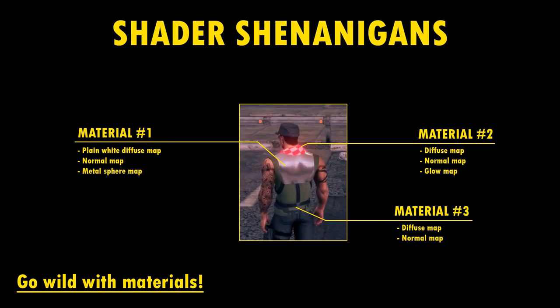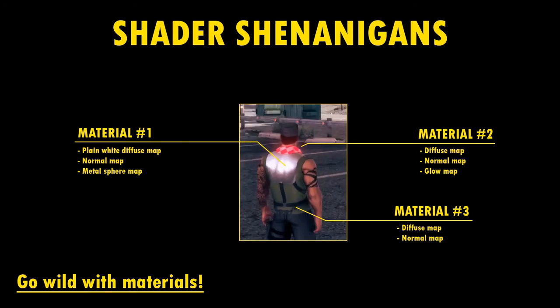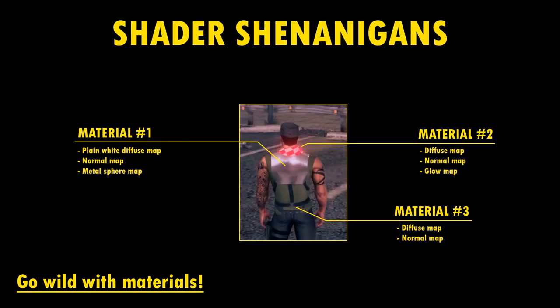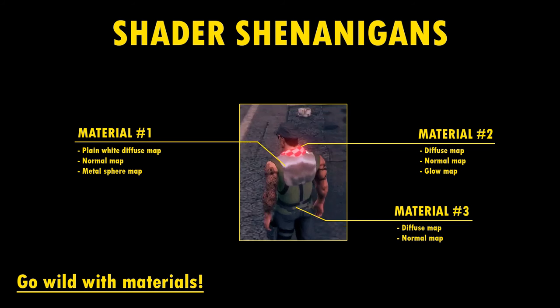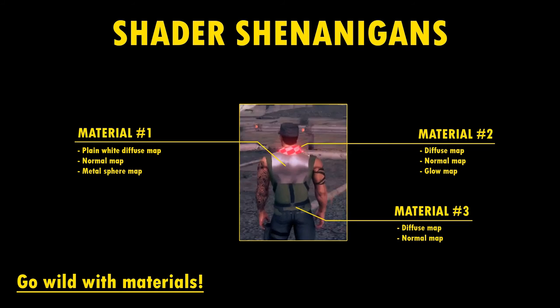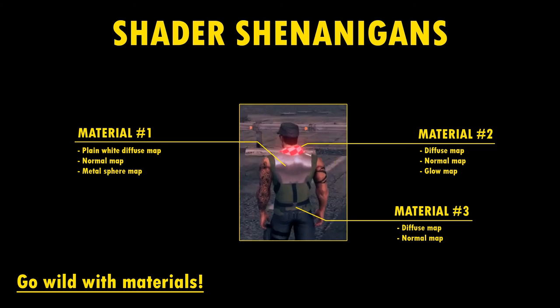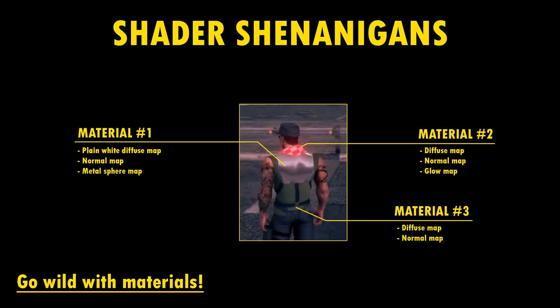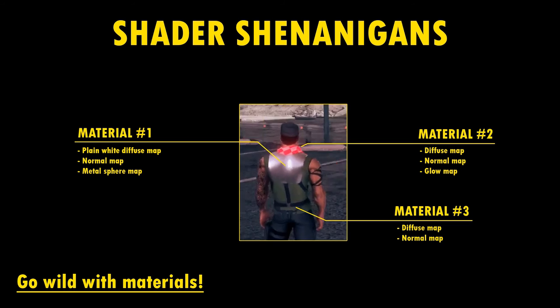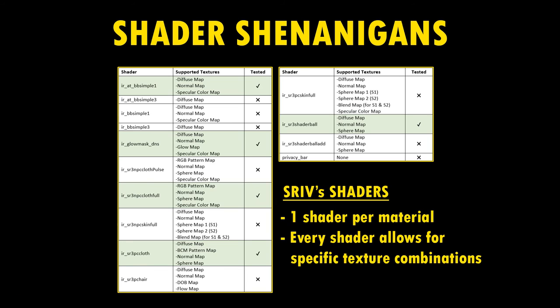Something to notice is that Scenestro 4 has multi-material support, so you can use as many materials as you want on a single 3D model. This allows for great artistic freedom in shader and texture combinations. For example, you could have some parts of your model use only a diffuse map and a normal map, and other parts could be shaded with a sphere map. To every material you add to your model, you have to assign one of Scenestro 4's shaders. Note that every shader allows for different texture combinations, so make sure you don't combine textures in a way no shader supports, though you can leave out certain textures of a shader.